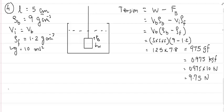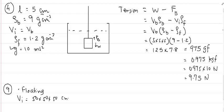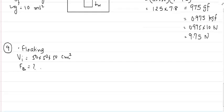Question 9 from the textbook: a block of wood is floating on water with dimensions 50 × 50 × 50 cm inside water. So we have the case of floating, and the immersed volume VI is given as 50 × 50 × 50 cm³. We need to calculate the buoyant force acting on the block, with g = 9.8 m/s².